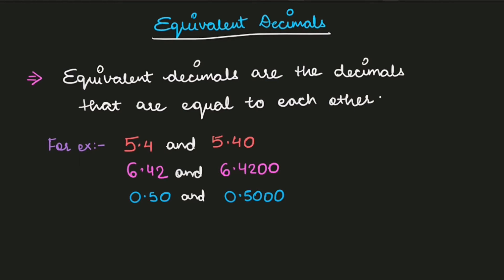If you add zeros at the back of a decimal, it will have no impact on the overall value. But if you add a zero in the beginning or in the middle of the decimal digits, then your decimal will change.